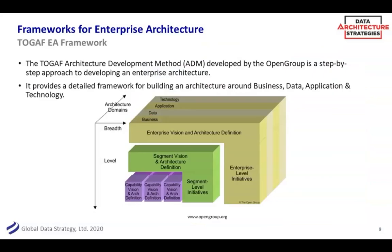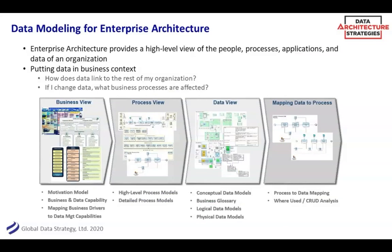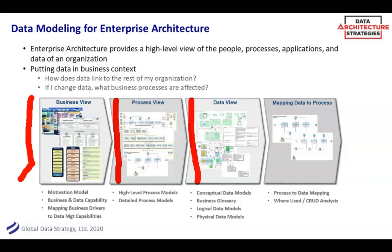Another common and very helpful framework is TOGAF. That's where they look at their topology of linking business, data, applications, and networks. No matter what framework you use — there are pros and cons to each — the nice thing is that it gives an enterprise view of the organization. At a basic data level, one framework we've used asks: do we have the business view of data? What are our motivations? What are the business capabilities? What are the business processes that drive usage and understanding of data? How do we model the data itself at different levels — from conceptual to logical — or even at the metadata level or glossary? And how do we map and link these together: data to process, data to capability, et cetera?